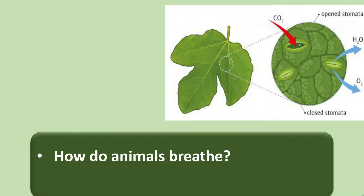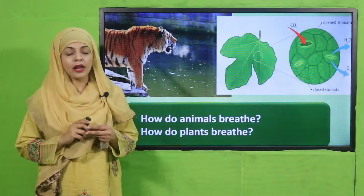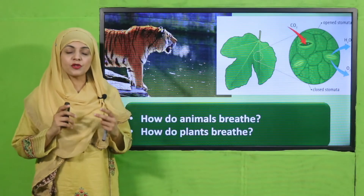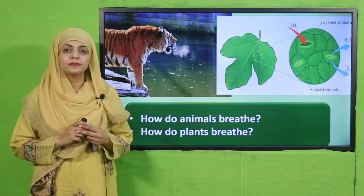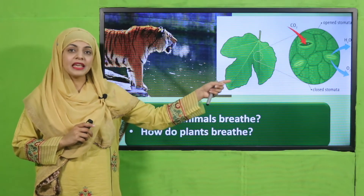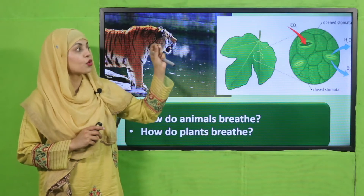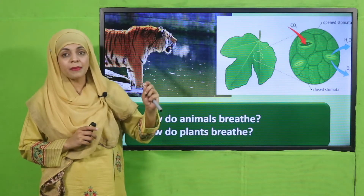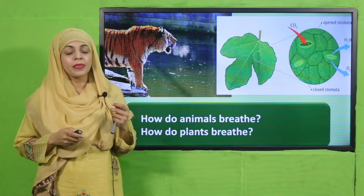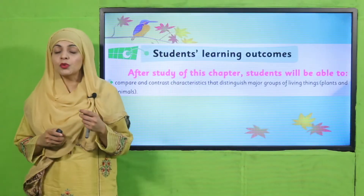How do animals breathe? Animals breathe through their lungs. How do plants breathe? Plants breathe through their leaves. The leaves present on the trees have stomata on them, and that is how gas exchange happens in plants.